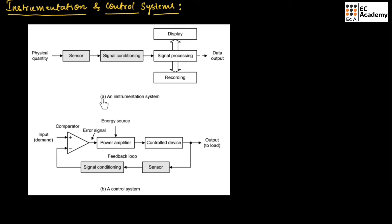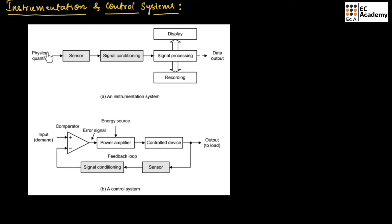Figure A shows an instrumentation system. It consists of sensor, signal conditioning, signal processing, display, recording, and data output. The physical quantity that needs to be measured will act upon the sensor.